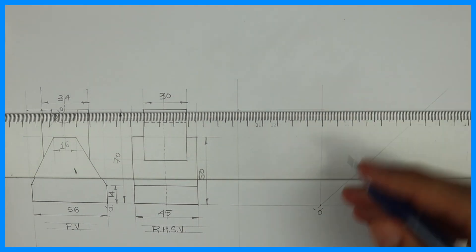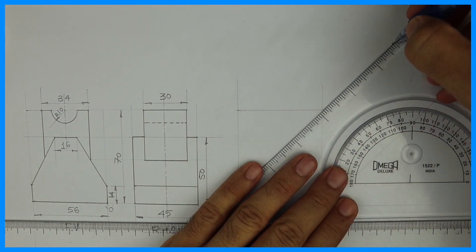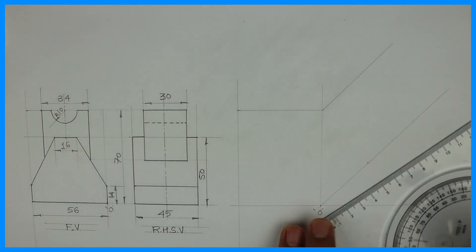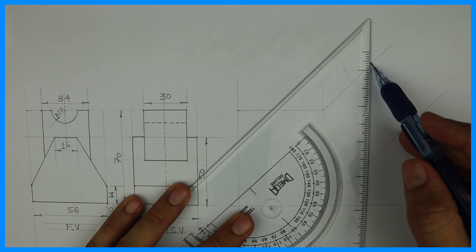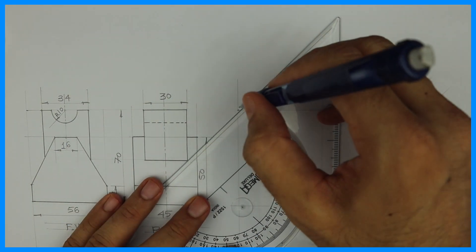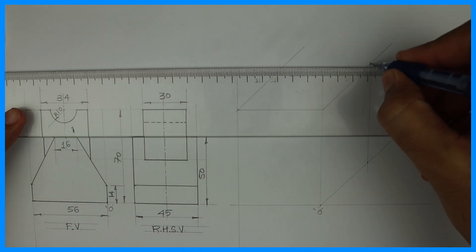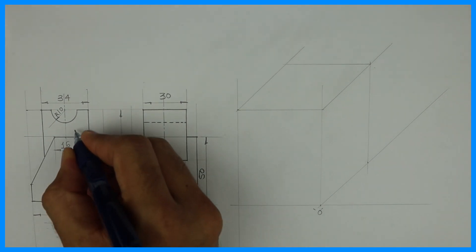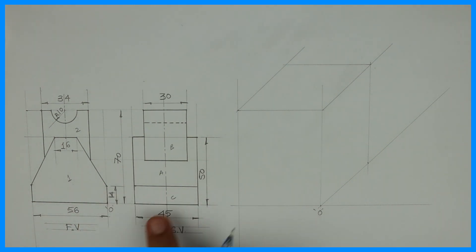So first we will complete the box. See, after completing the box there are two parts: part one and part two over here, part A and B and C. So we'll start with front view with part one because it is nearer to us.